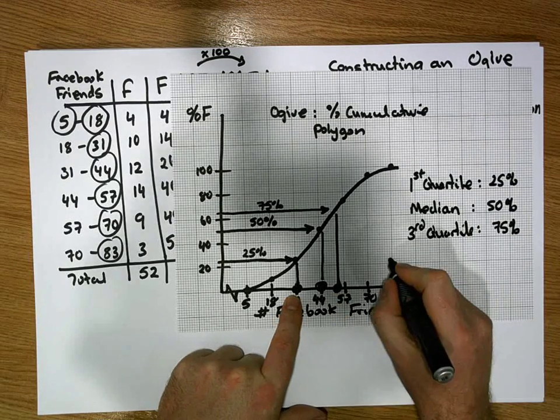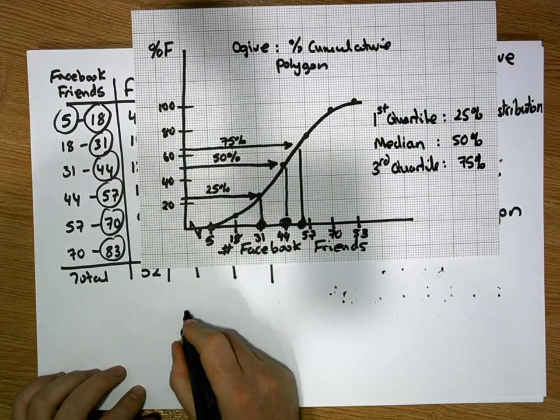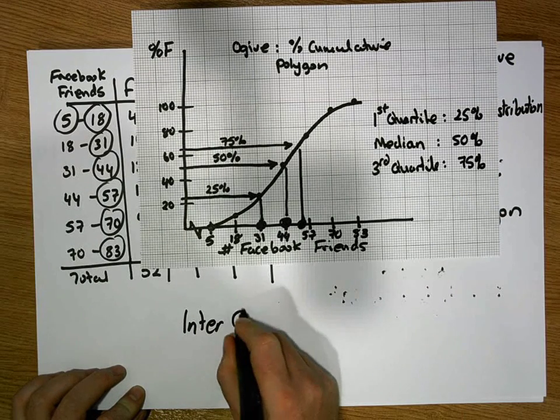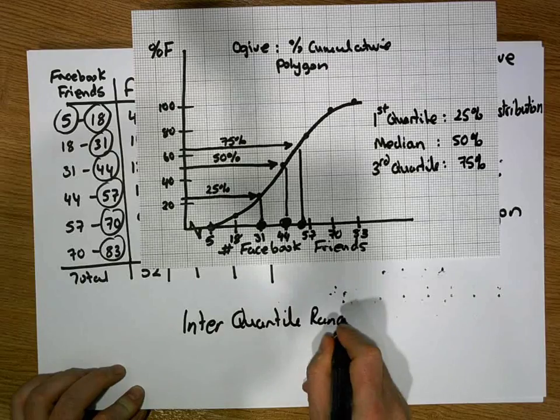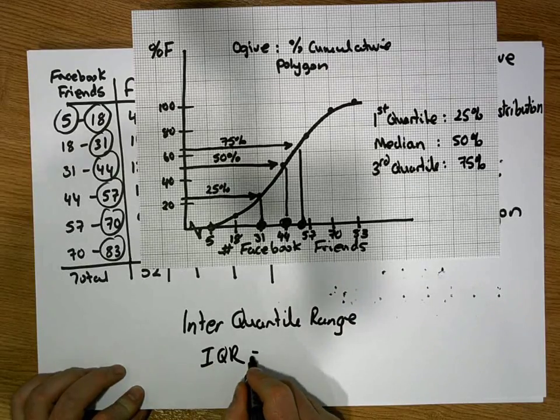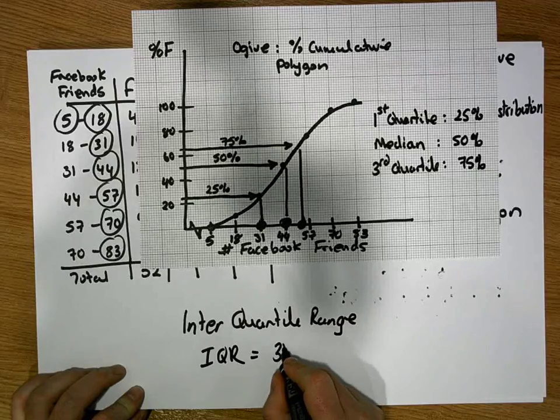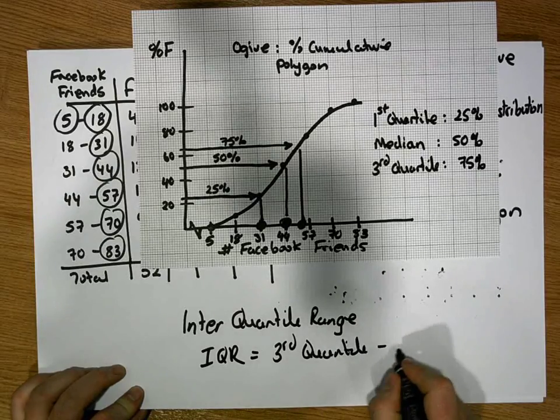So the interquartile range, which is IQR, is simply equal to the third quartile minus the first quartile.